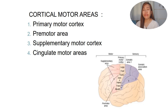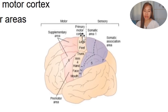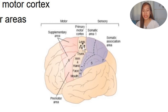There are different cortical motor areas to understand. First, we have the primary motor cortex. As we can see in this picture, this executes movements that are then transferred to the brainstem and spinal cord, where lower motor neurons cause voluntary movement.